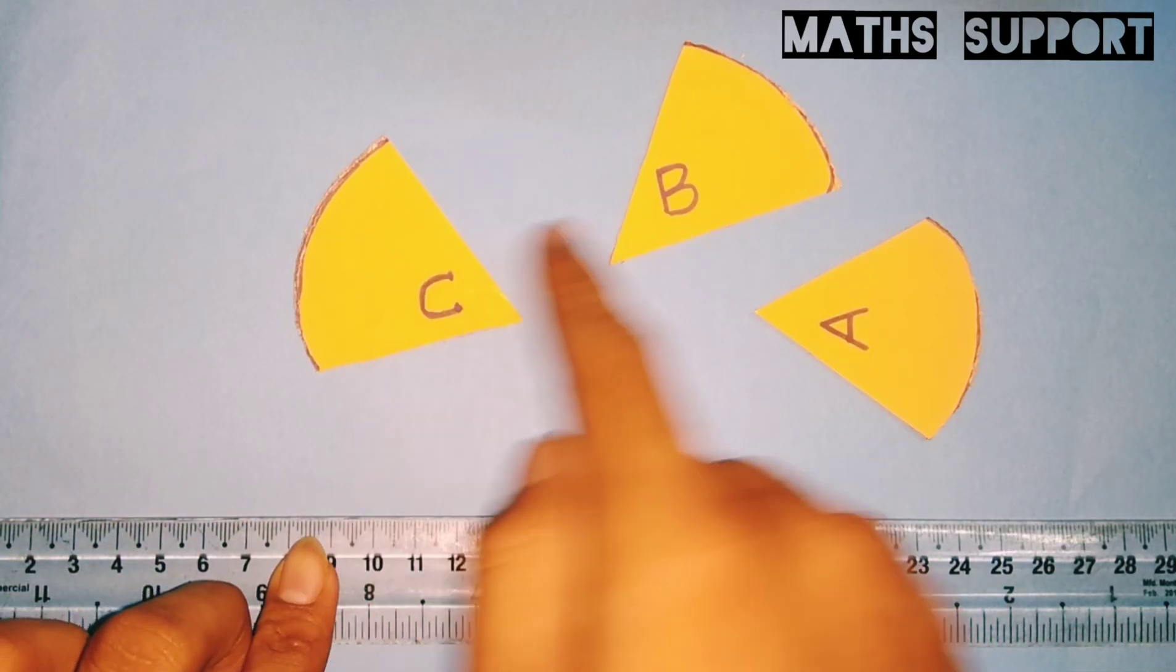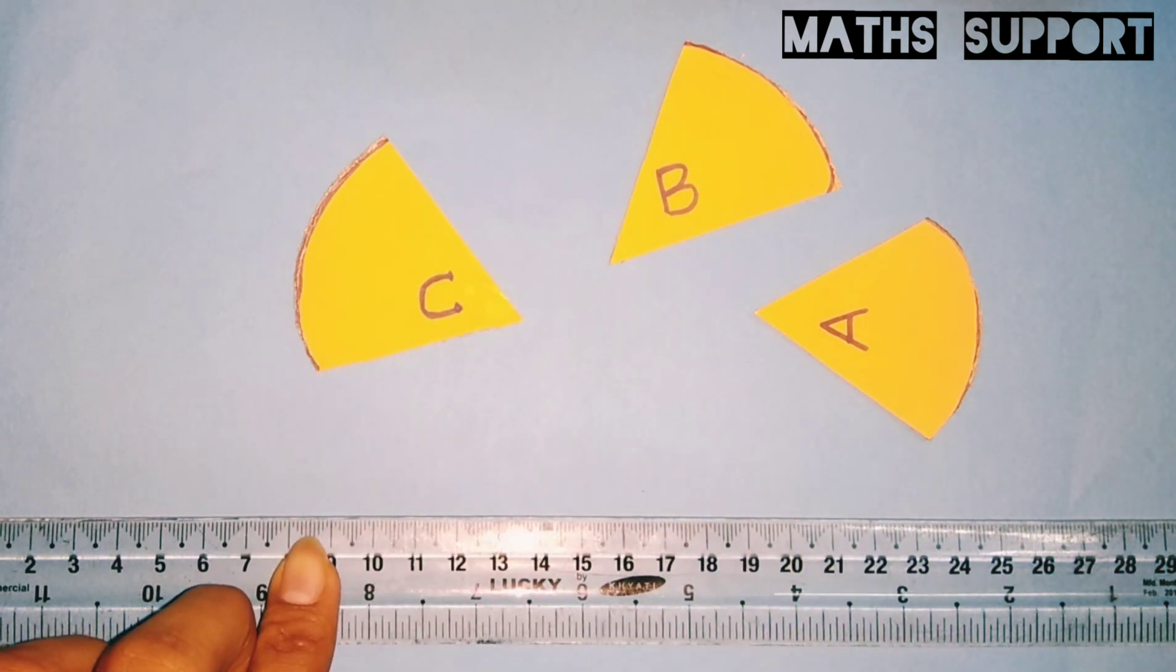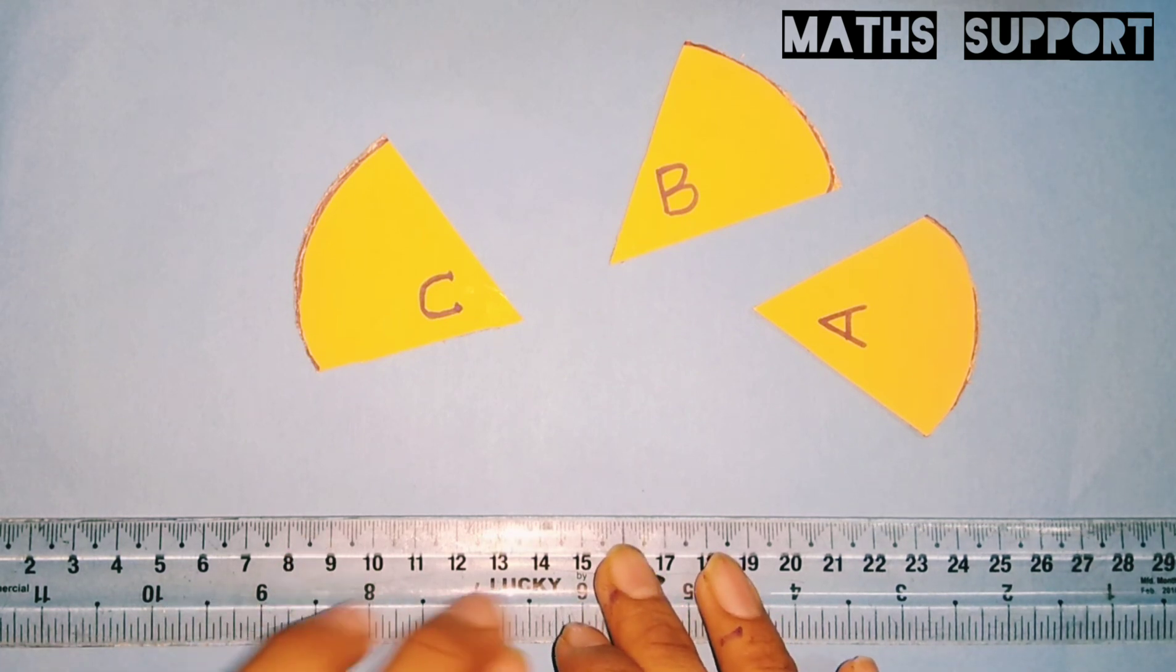I have cut off all these three angles of triangle A, B and C. So if I combine these three angles, then it should create a straight line because angle sum property is 180.